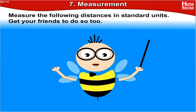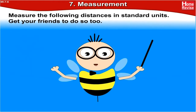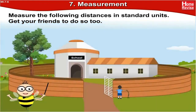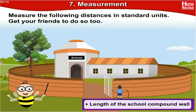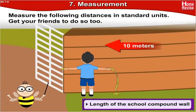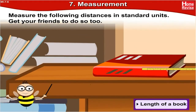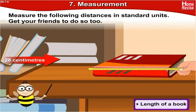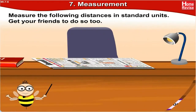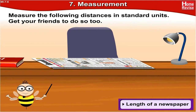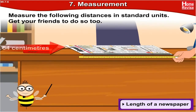Measure the following distances in standard units. Get your friends to do so too. Compare your observations and measure again if there is a difference. Length of the school compound wall — when we measured, it was 10 meters. Length of a book is 28 centimeters. Length of a newspaper, when we measured, it was 54 centimeters.